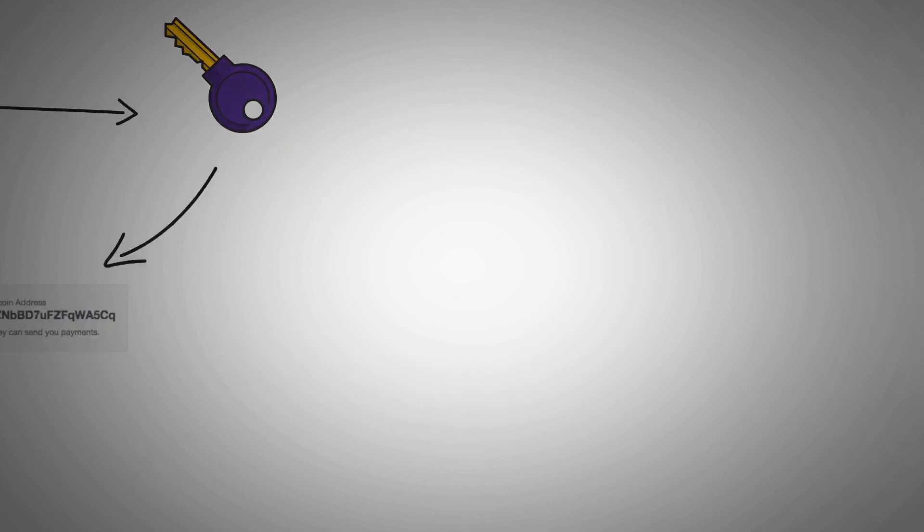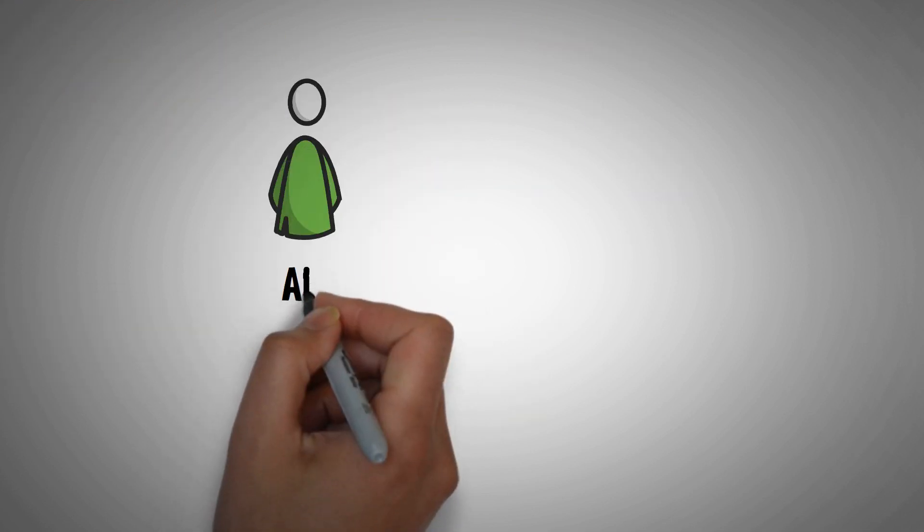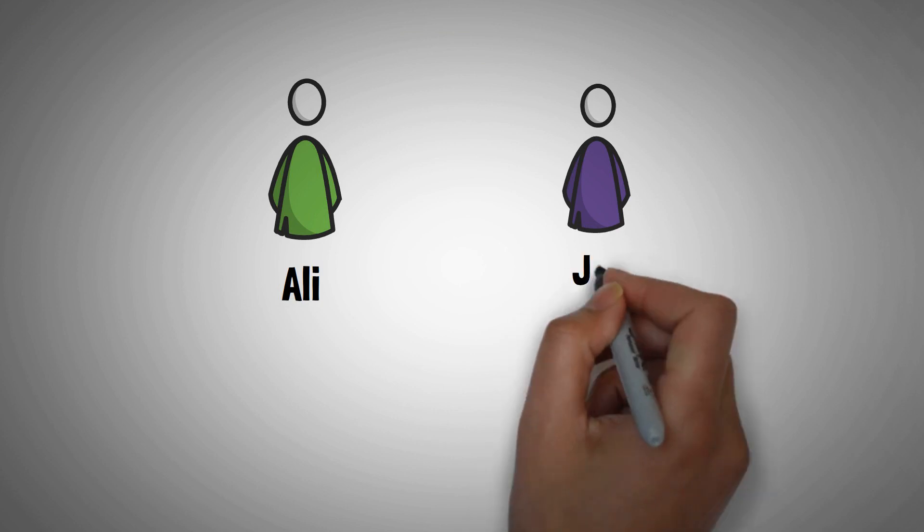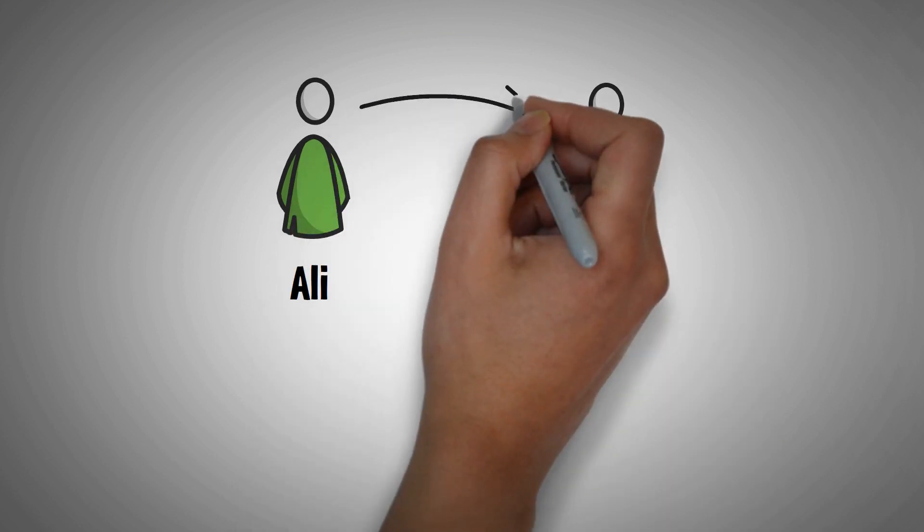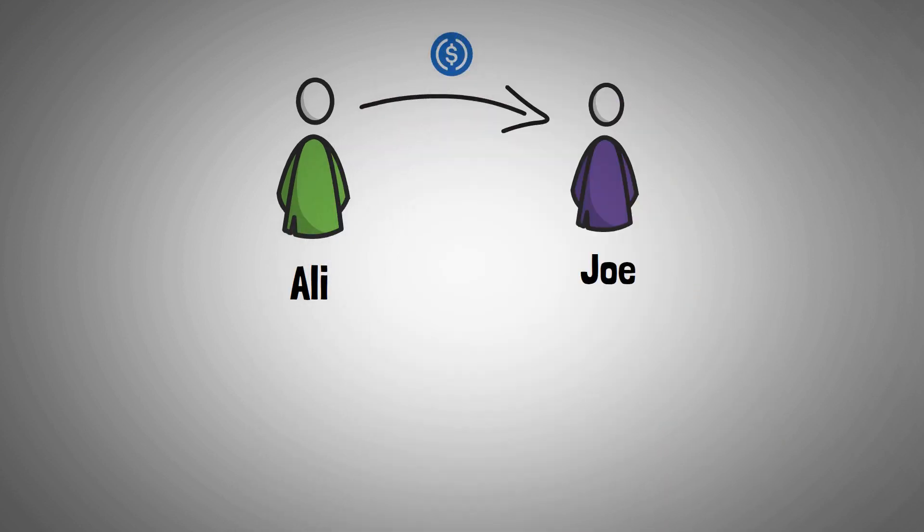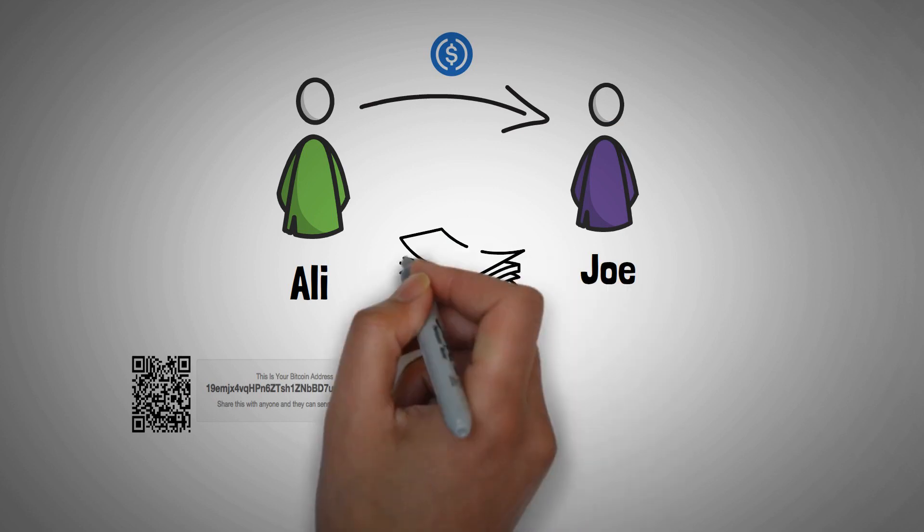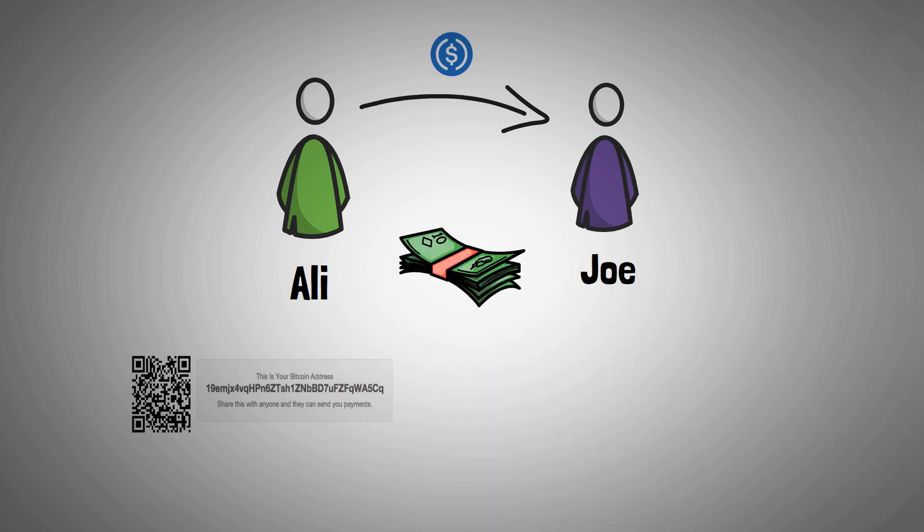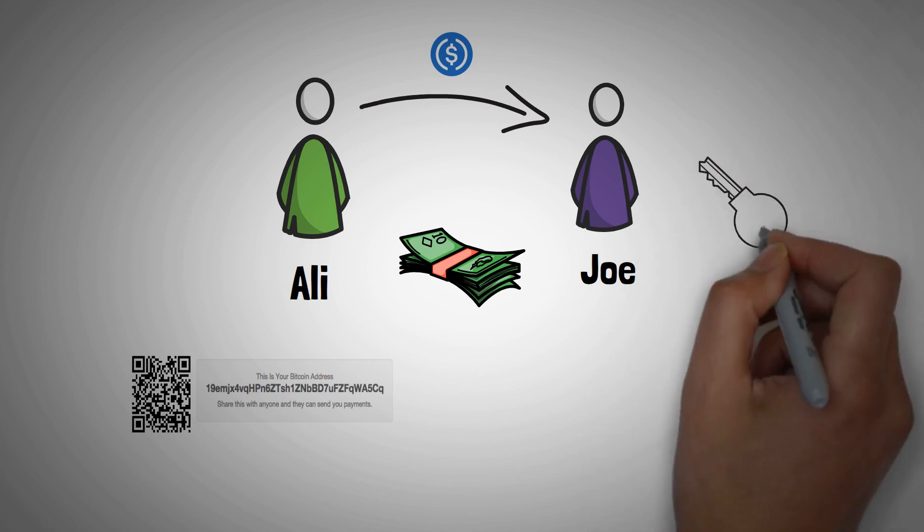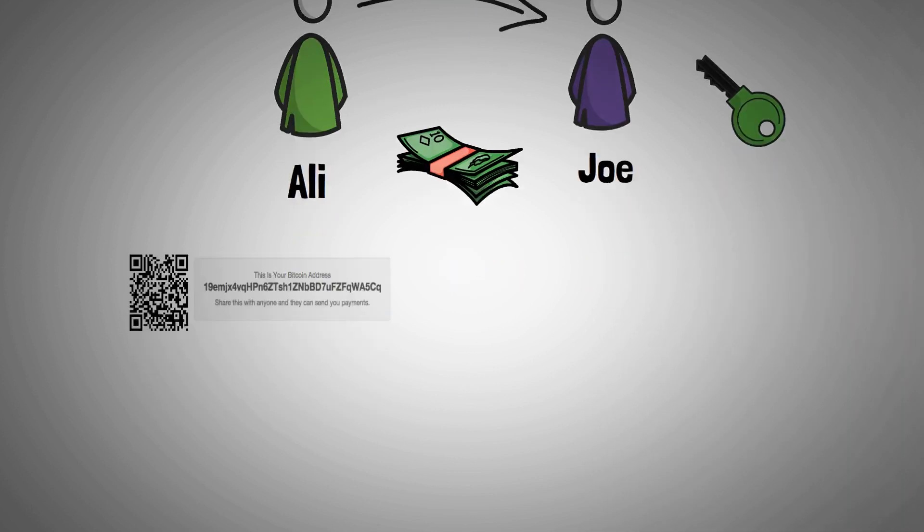Let's have this example: Ali and Joe are crypto traders and Ali wants to send 100 USDC to Joe. Firstly, Joe will reveal his public address to Ali. Secondly, Ali will send the funds to Joe, which is 100 USDC. And finally, Joe will be able to receive his funds and will be in control of his funds using his private key. This is how it's processed.